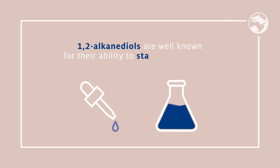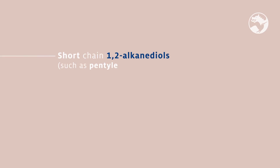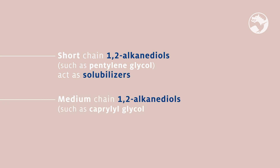Things aren't always complicated for our heroes to team up, because some multifunctionals may actually support the formulation. For example, 1,2-alkanediols are well known for their ability to stabilize emulsions, and this property can be exploited by incorporating them before the emulsification process. 1,2-alkanediols may also increase the viscosity of traditional surfactant systems in a certain concentration range. Short-chain 1,2-alkanediols such as pentylene glycol act as solubilizers, and medium-chain 1,2-alkanediols such as caprylyl glycol can help disperse pigments. Some multifunctionals also have the ability to alter the sensorial profile of the formulation and improve skin feel.